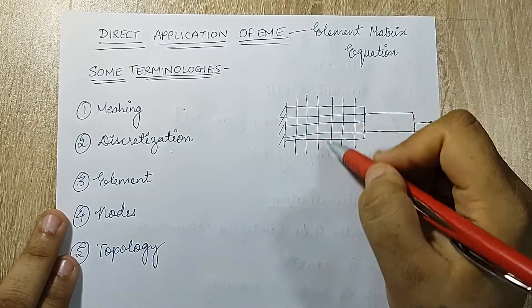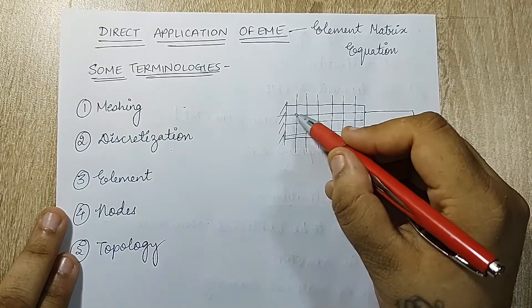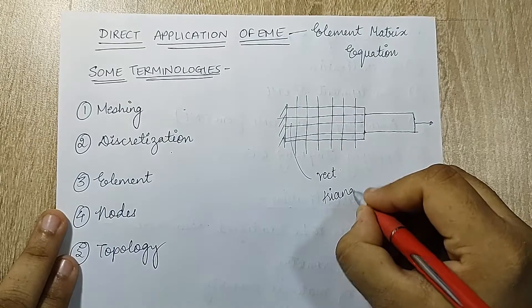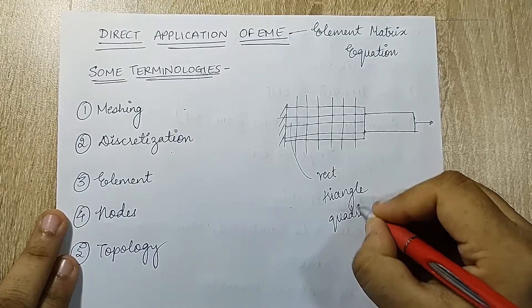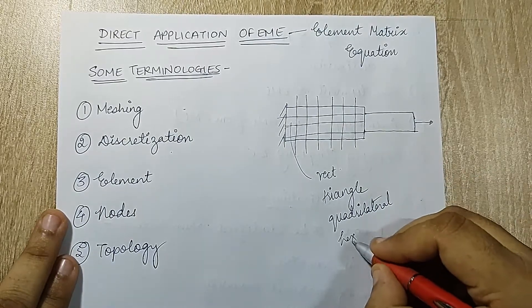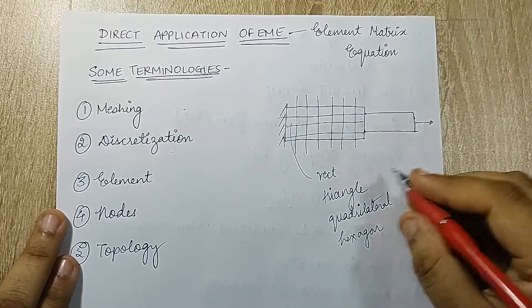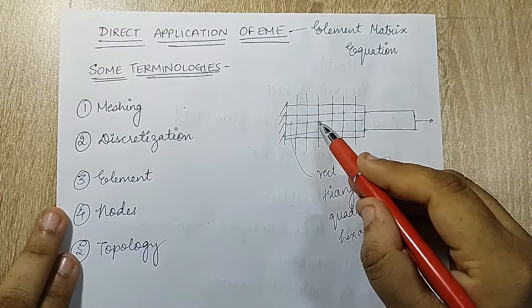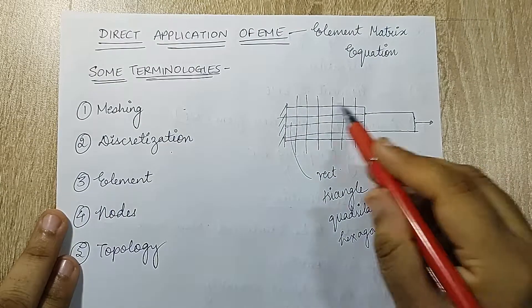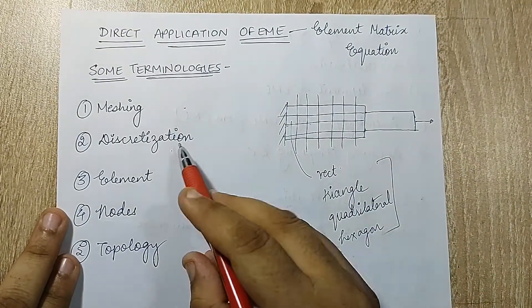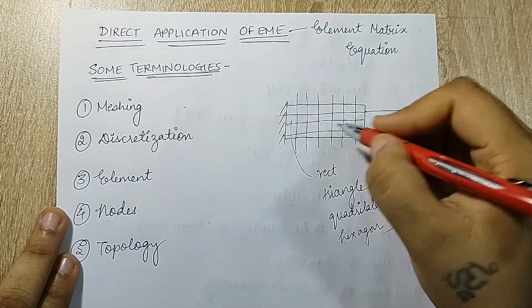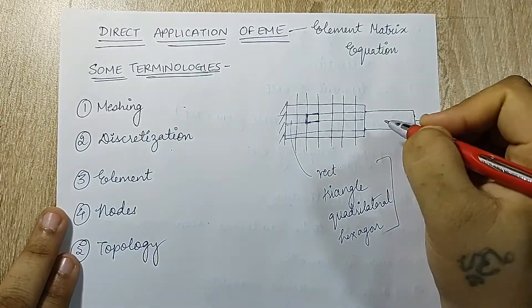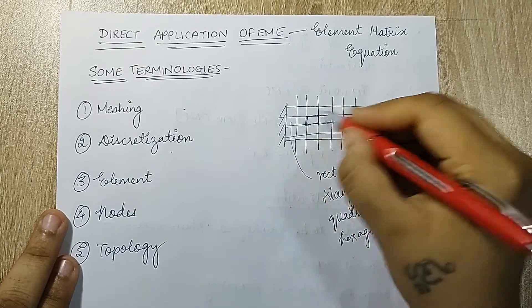The next term is discretization, which means dividing a structure into smaller sections. These sections can be rectangular, triangular, quadrilateral, hexagonal, or any shape. You solve for one or two elements and then integrate in the software to get the answer for the entire body. This is discretization. Each small section is called one element.